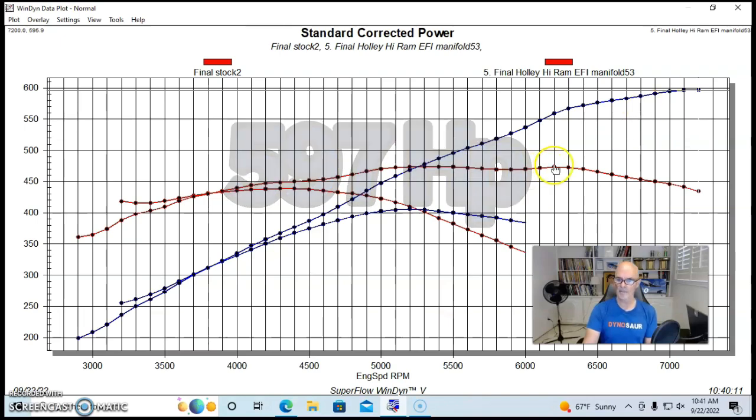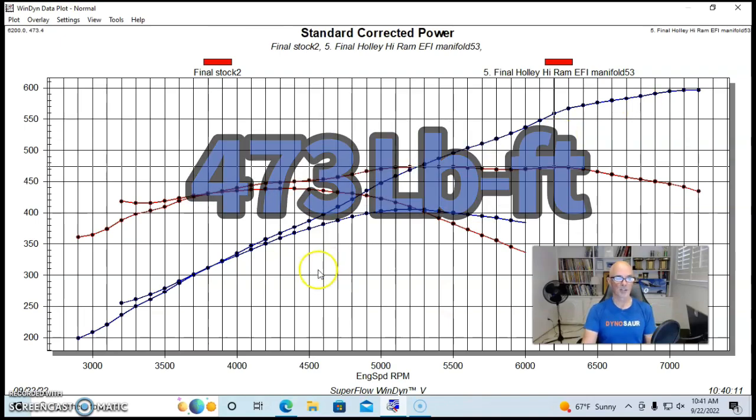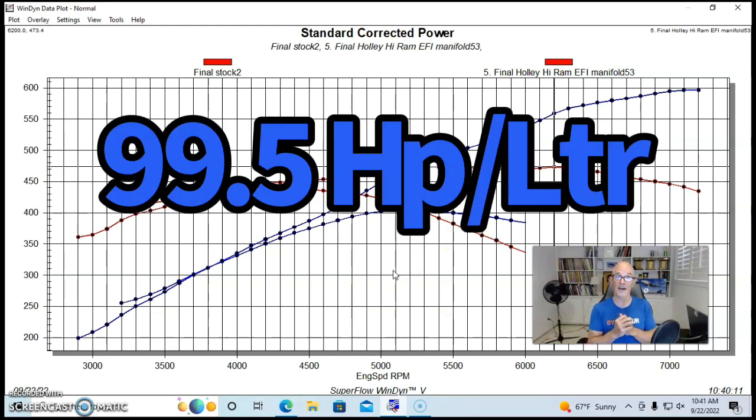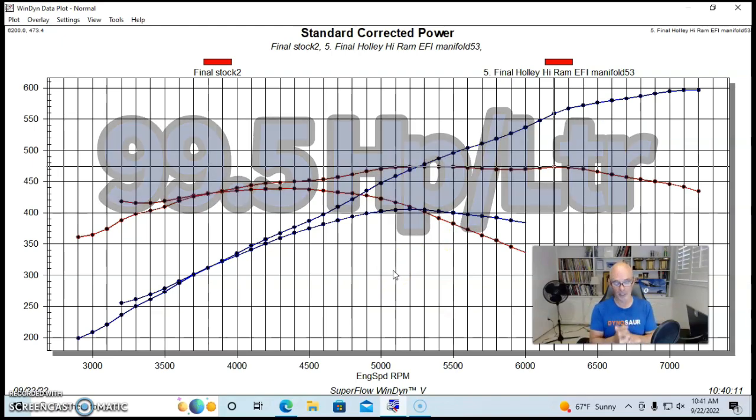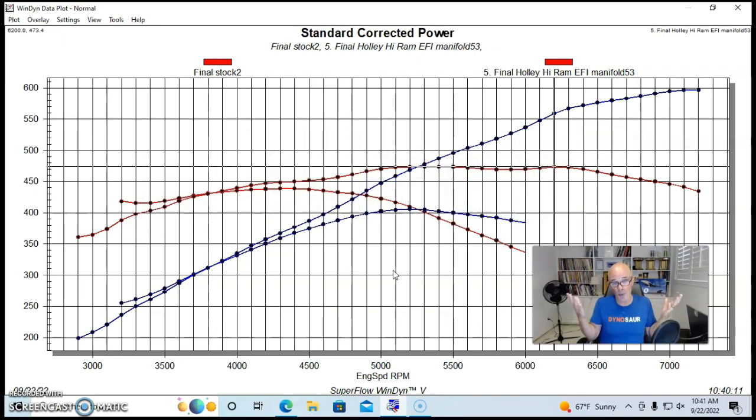But here's what it produced with the Holley Hi-Ram: 597 horsepower and 473 foot pounds. And as you can see, we lost a little bit of power down low below 3,500 RPM. It got very, very close to making 600 horsepower, and the torque was pretty reasonable. But what I wanted to show you, that by the way puts us at 99.5 horsepower per liter, or 1.64 horsepower per cubic inch, so a pretty good amount.